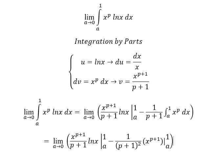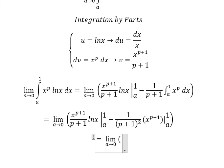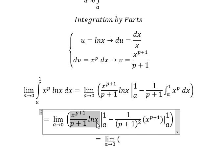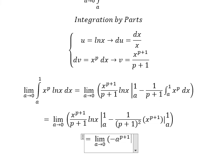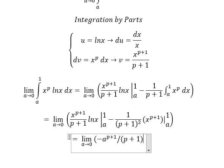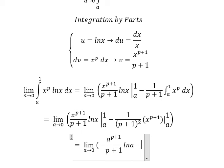Now we have the final answer. I will put number one in here, so we get ln(1) which equals zero. Minus we have a to the power of b plus one over b plus one, and we put ln(a) here. So we have the expression like this.